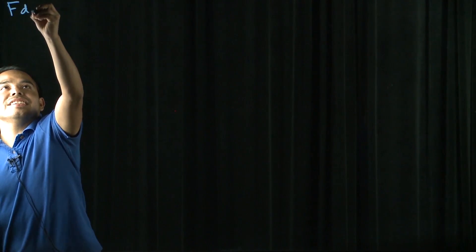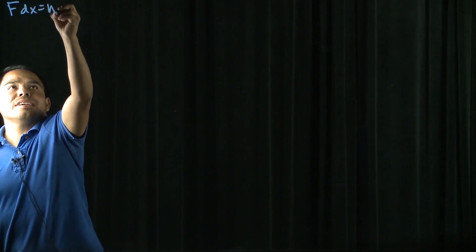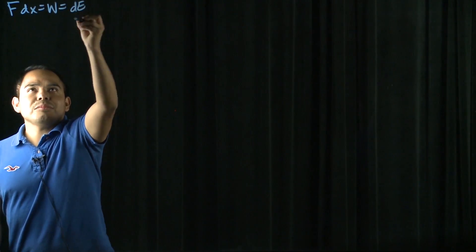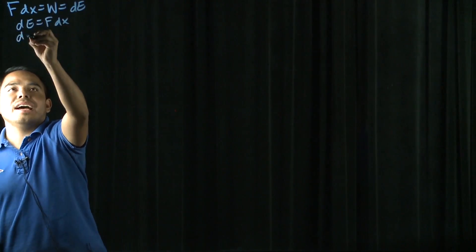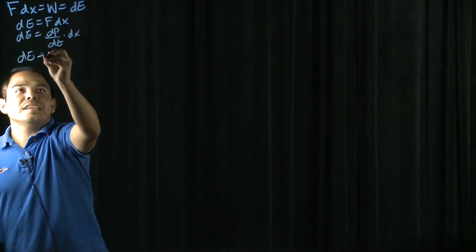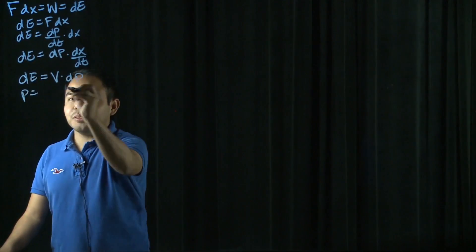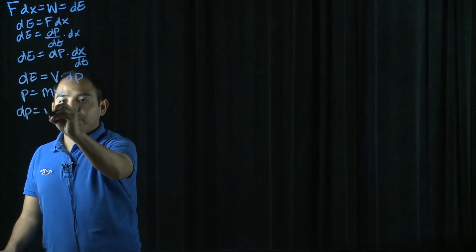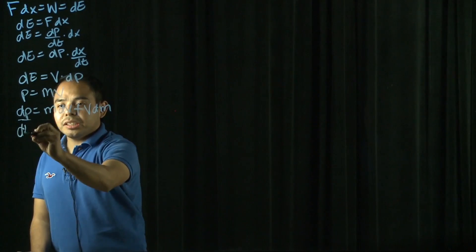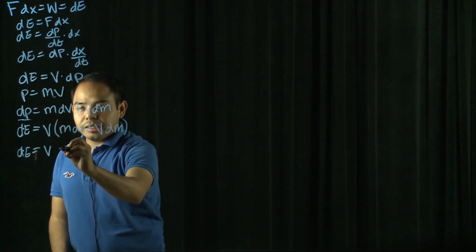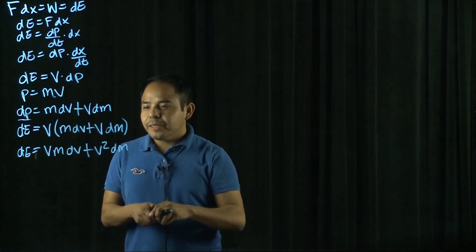We're going to start out by saying that force times the distance — the change in distance — is equal to the work, which is also equal to the change in energy. And then we're just going to multiply the velocity through, so we end up with: the change in energy is equal to velocity times mass times the change in velocity, plus velocity squared times the change in mass.